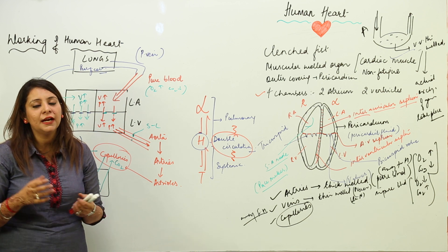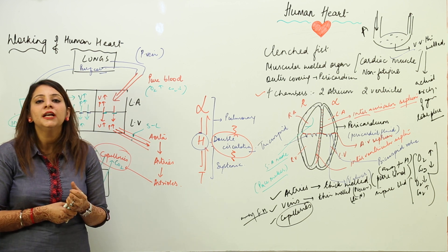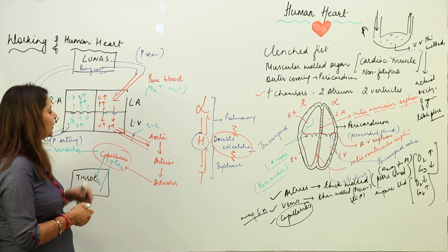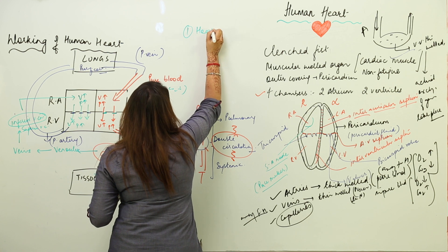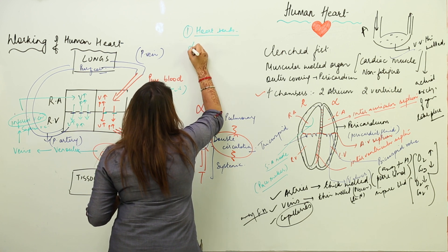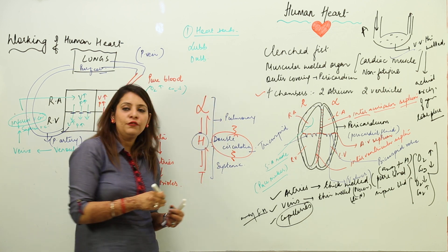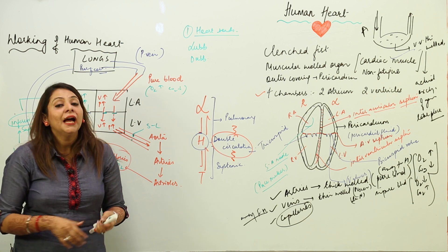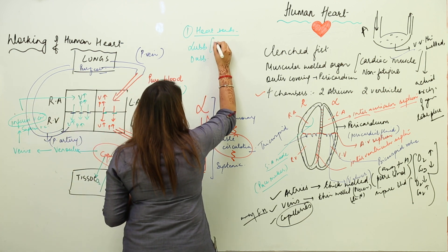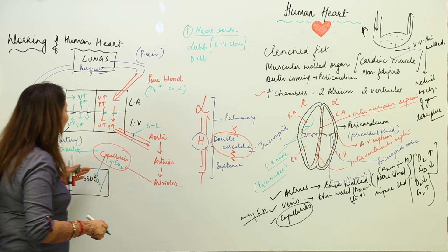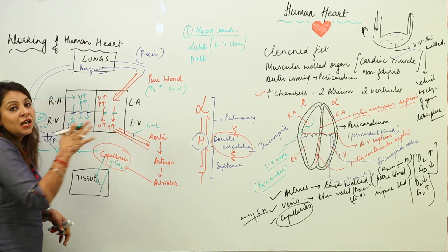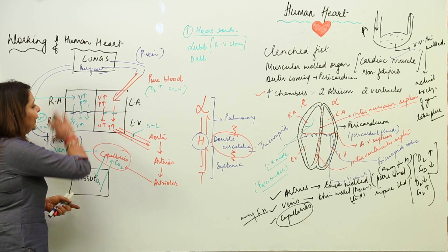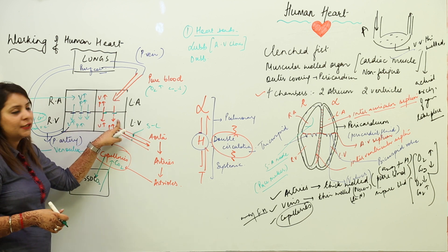The heart is a very important organ pumping blood to all body parts. There are certain phenomena associated with the working of the heart. One is heart sounds — the heart produces two kinds of sound: lub and dub. Two atria work together and two ventricles work together, so no chamber remains vacant.